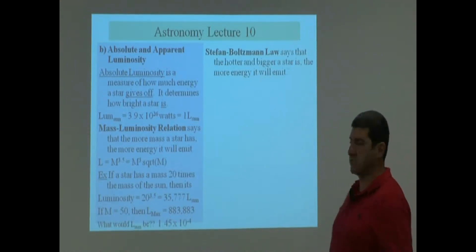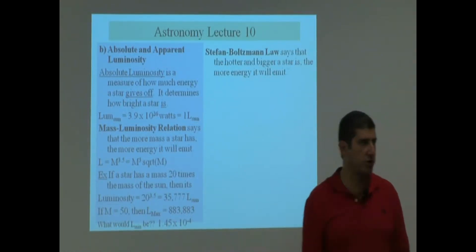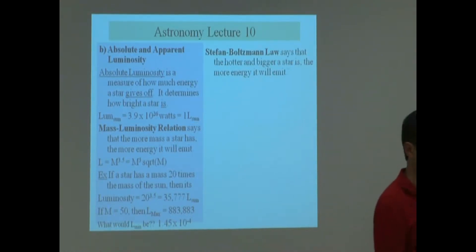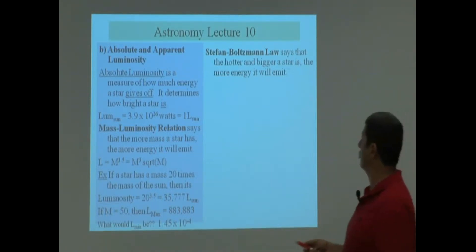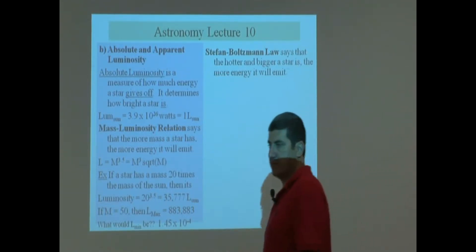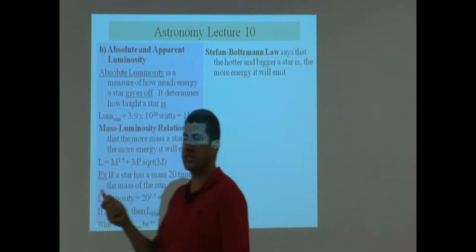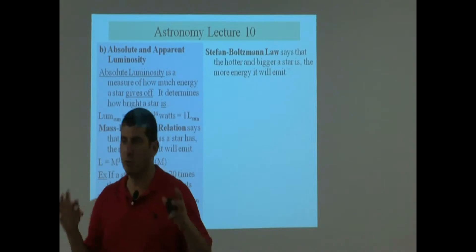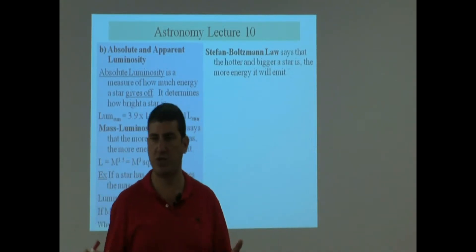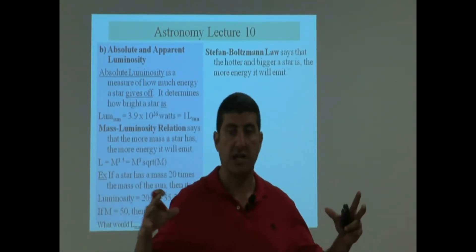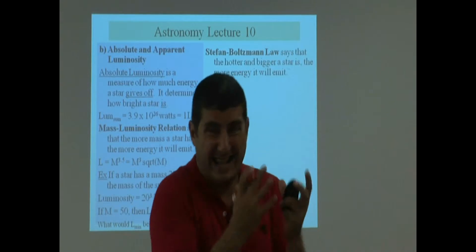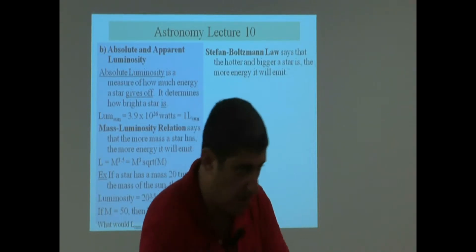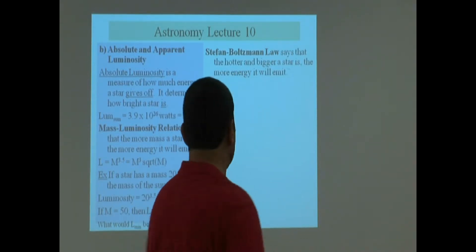The Stefan-Boltzmann law says that the brighter, the hotter and bigger a star is, the more energy it will emit. The other one said the more mass it has, it will emit more energy. This one says if it's big, if it's hot, then it's going to emit a lot of energy.